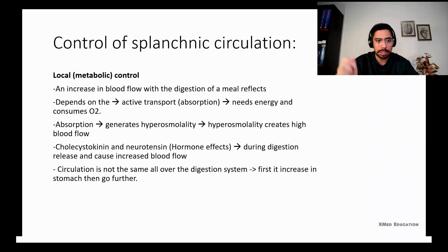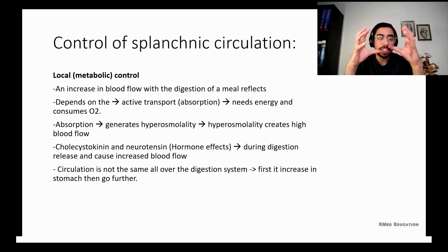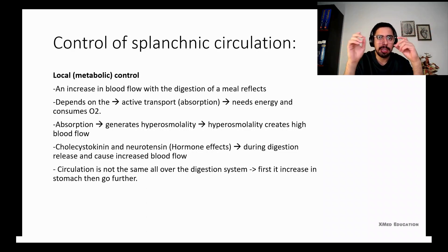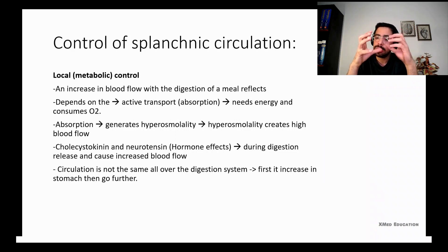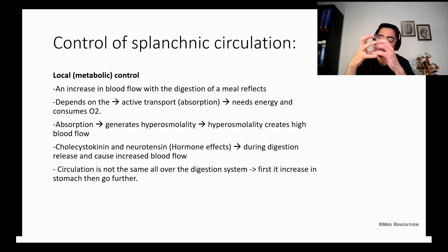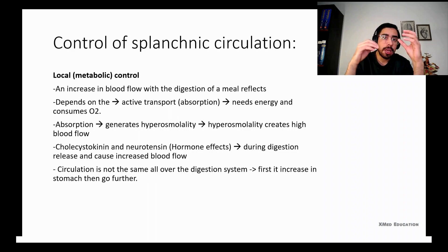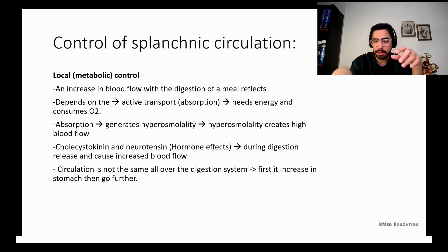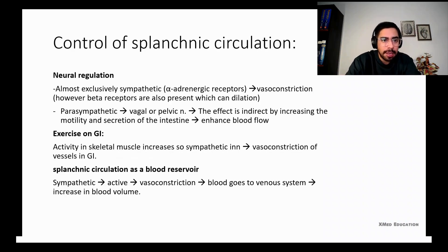Circulation in the GI tract is not activated throughout the whole tract at the same time. The body is smart — it focuses blood on the specific region currently active. If food is in the stomach, more blood goes to the stomach. When food moves to the small intestine, more blood goes to the small intestine.